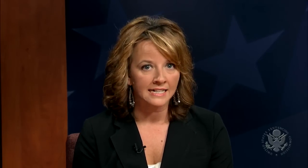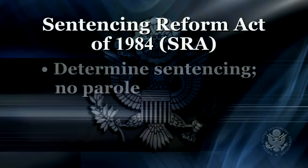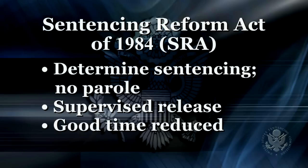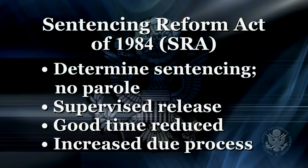Consequently, Congress, in a bipartisan effort, crafted and passed the Comprehensive Crime Control Act of 1984. The Sentencing Reform Act provisions of this act made some significant changes to Federal sentencing practices. Specifically, the act abolished parole in the Federal system and provided a determinate sentencing scheme. The act also implemented supervised release — a term of supervision of an offender after release from Federal prison to assist the offender's reintegration into society. The amount of good time for Federal inmates was reduced to no more than 54 days per year for sentences of over one year. Due process provisions in the Federal system were expanded and increased as well.